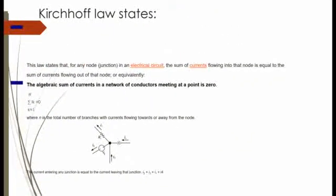Kirchhoff's current law states that for any node or junction in an electric circuit, the sum of current flowing into the node is equal to the sum of current flowing out of the node. As shown in this figure, you can see the incoming current and outgoing current in an electrical circuit.